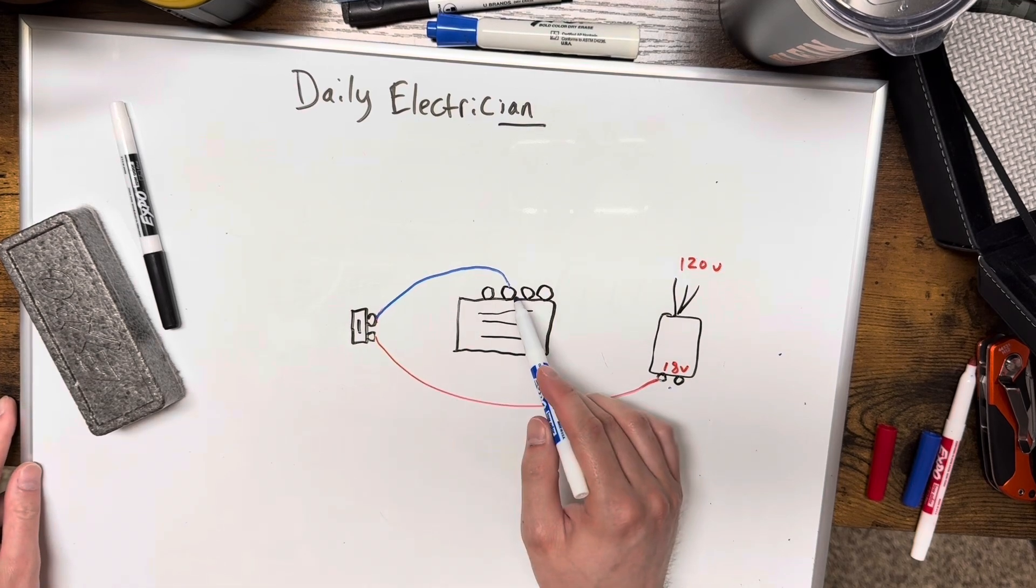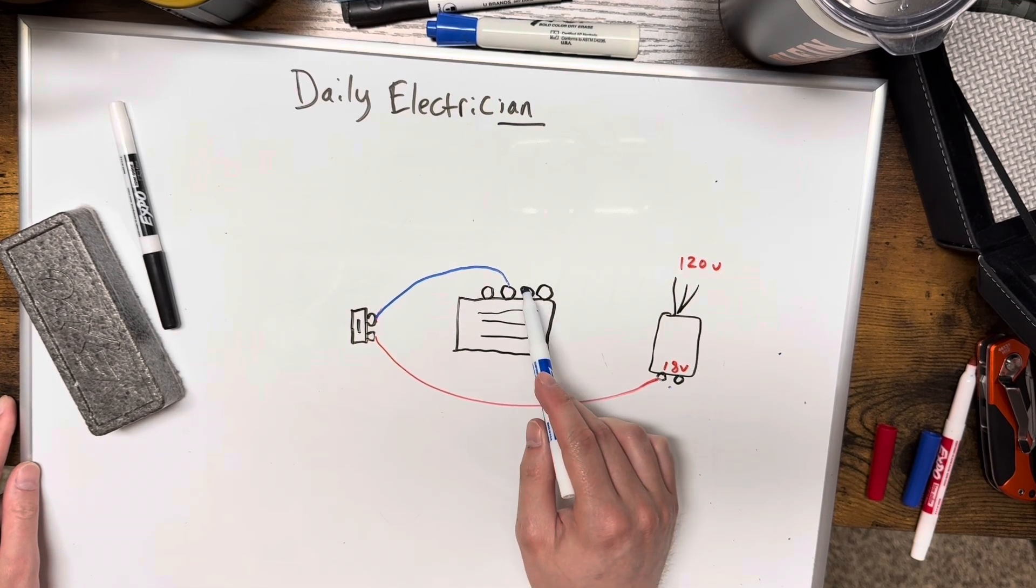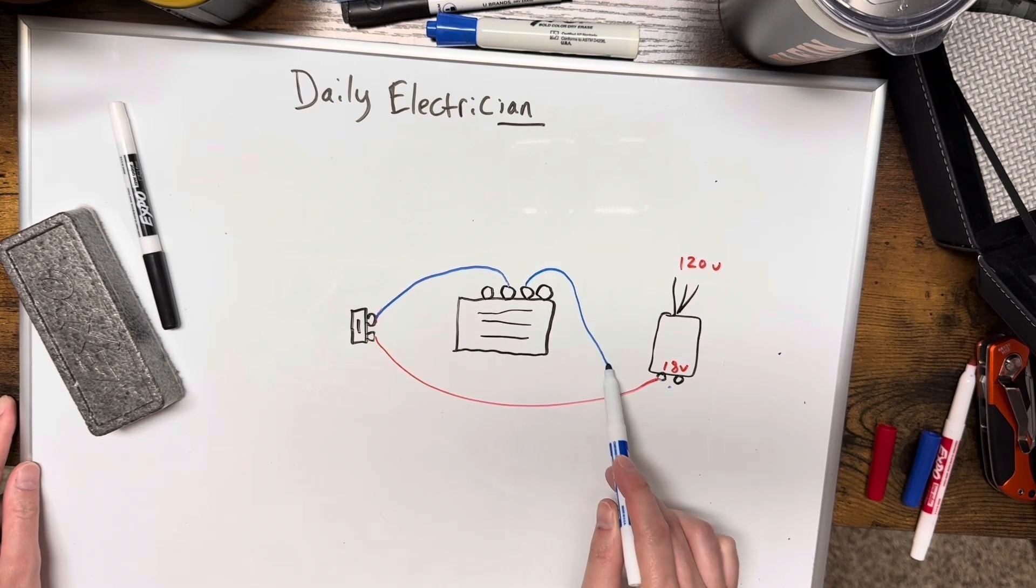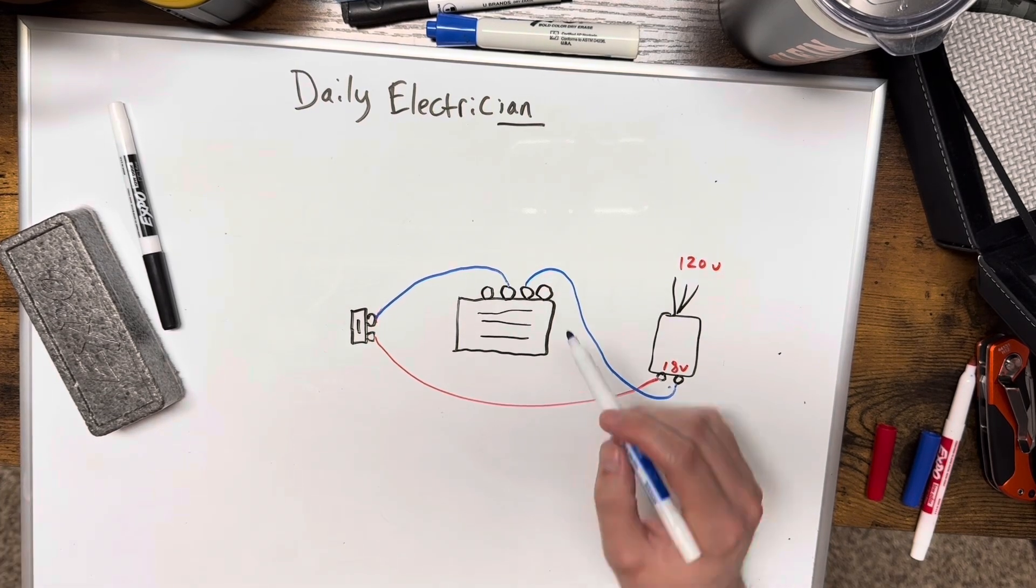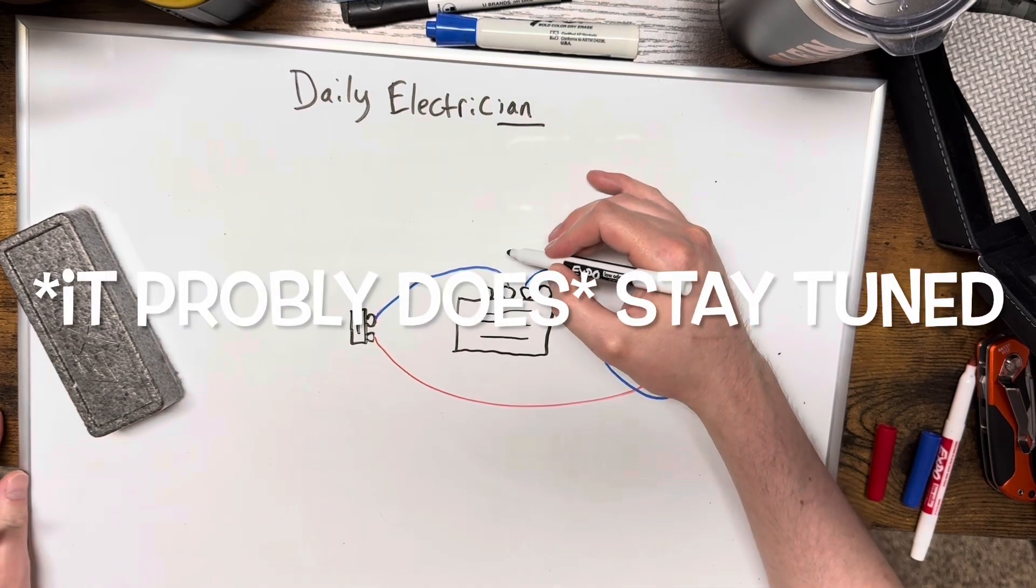So one wire is going to intercept in the middle here and then another wire is going to go out to the transformer.